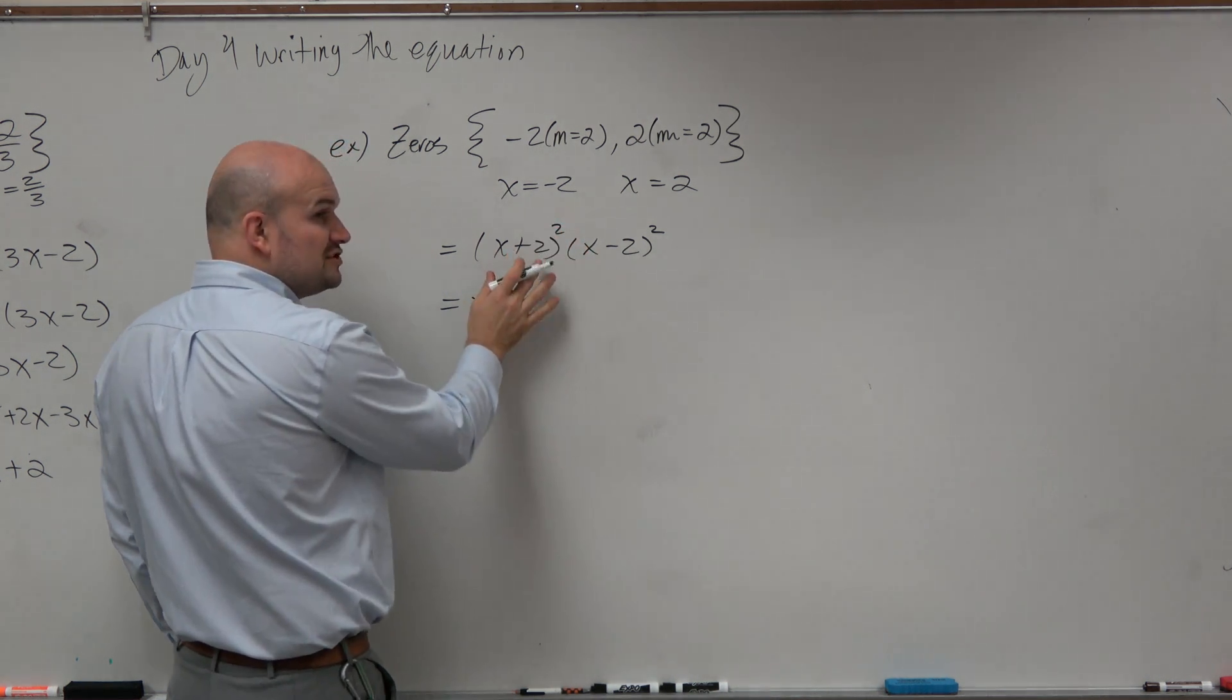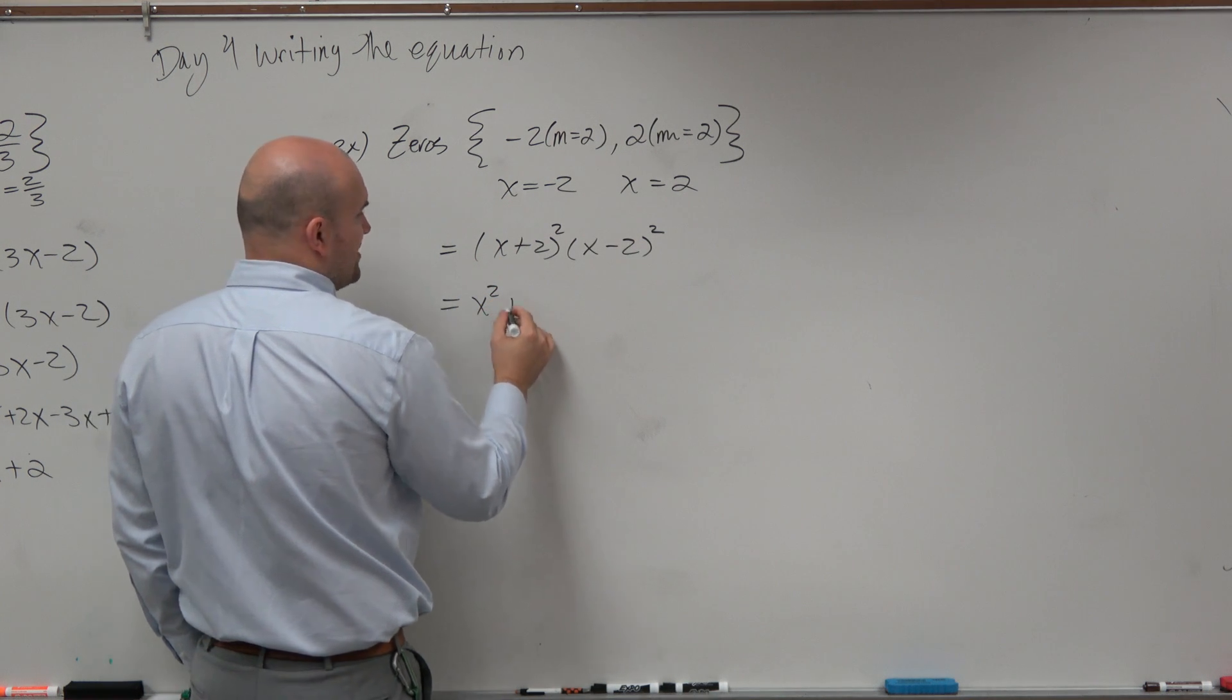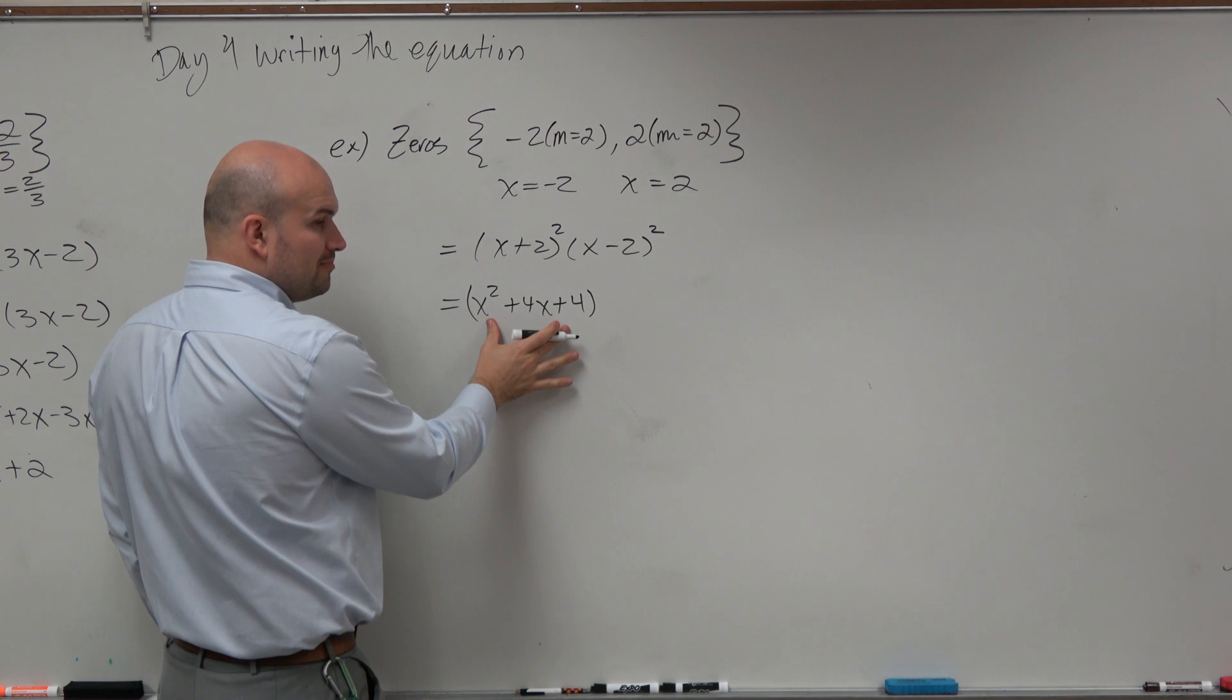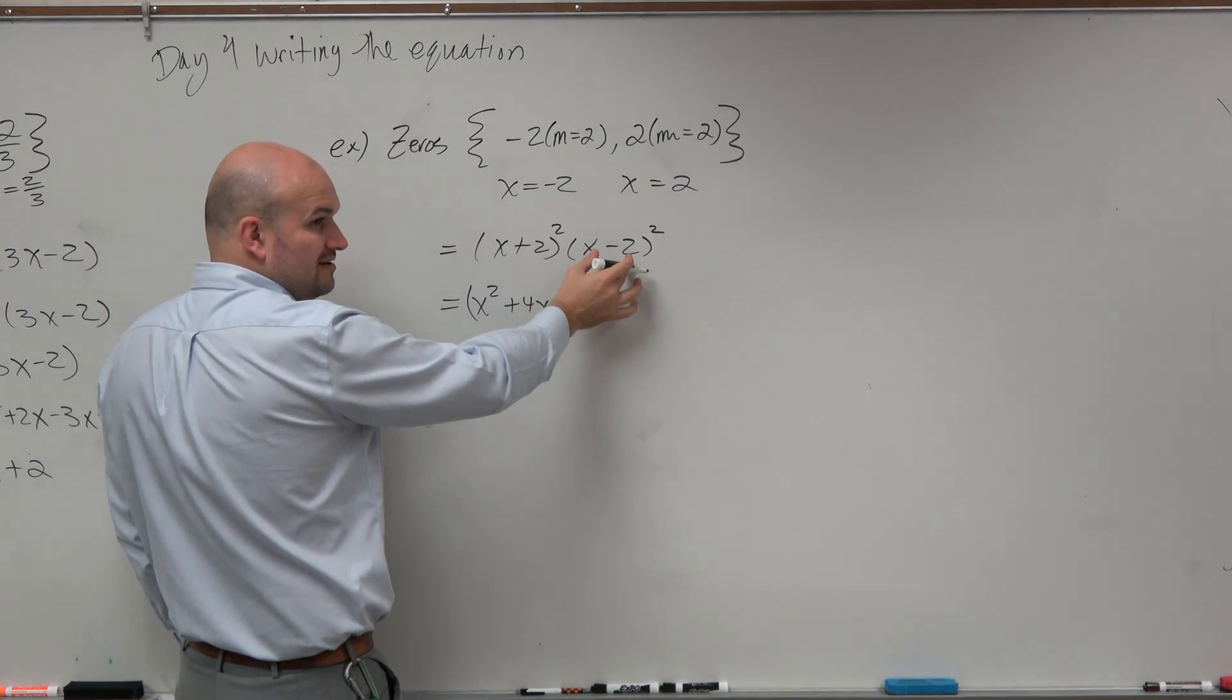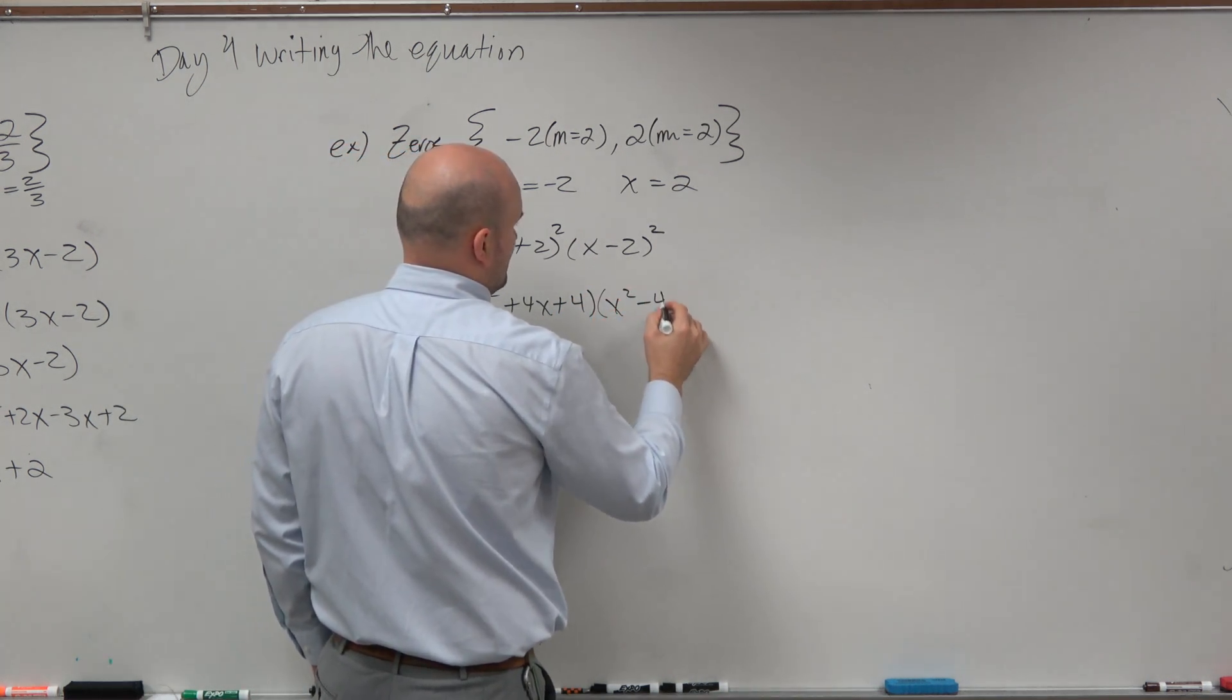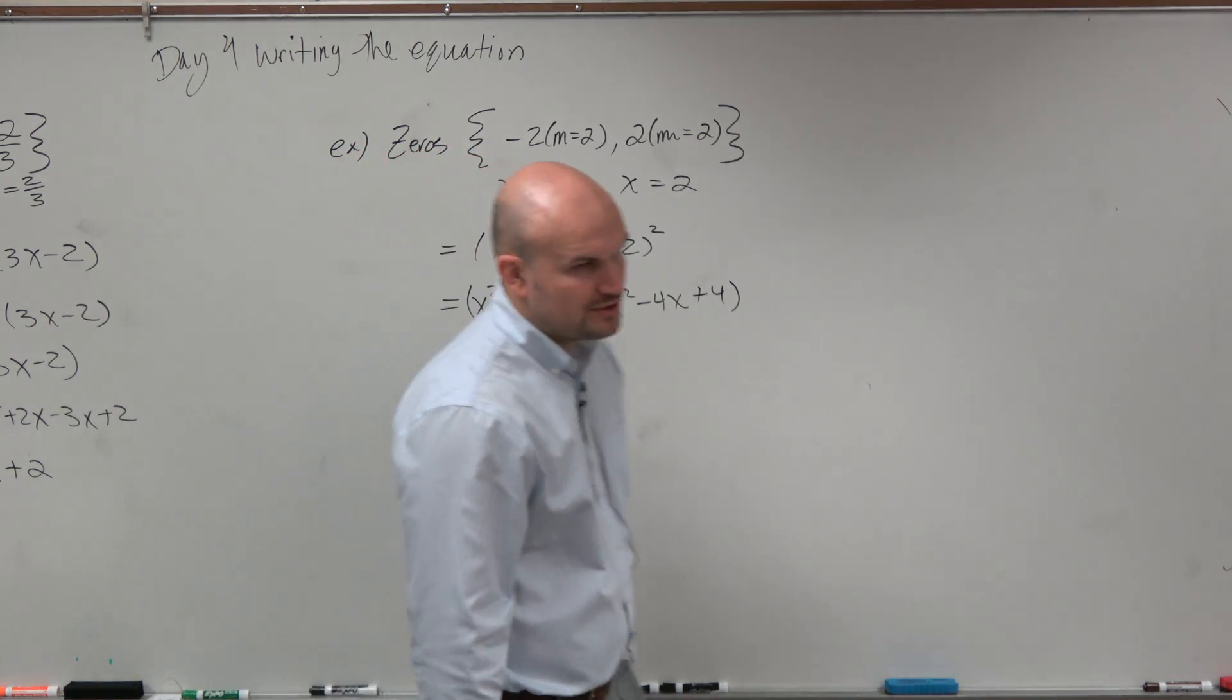last term squared, and then 2 times these two terms. So it's going to be 2 times 2x, which is positive 4x plus 4. That's the perfect square for positive. If negative, the only difference is the middle term is negative. That's just knowing your perfect square trinomials.